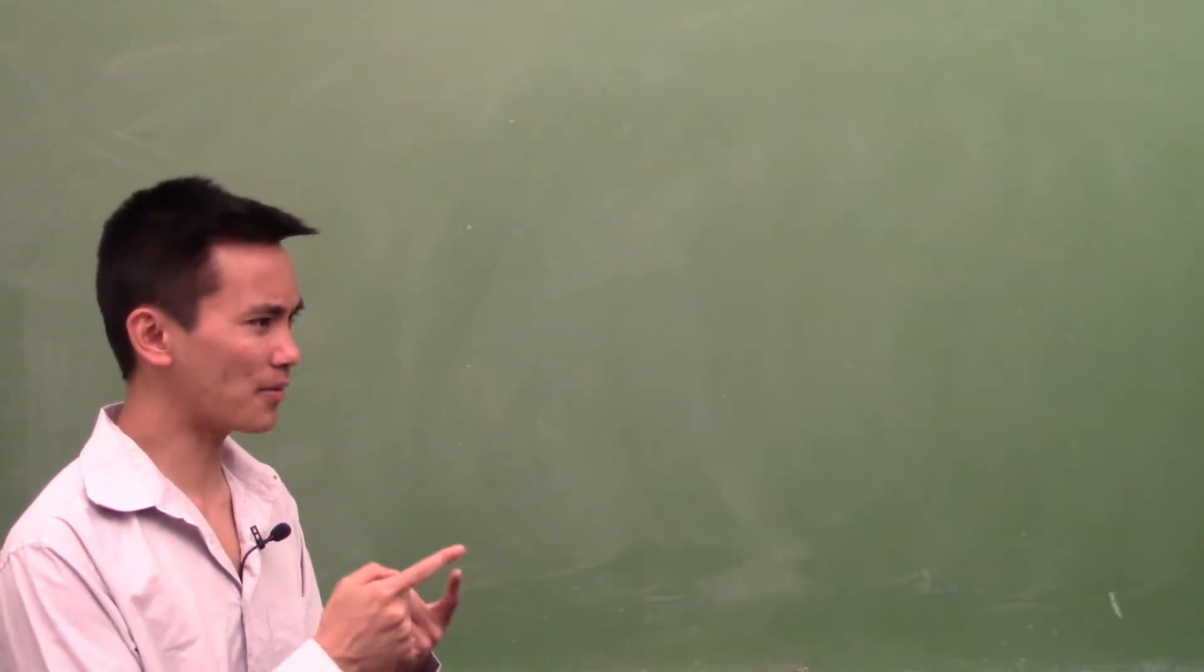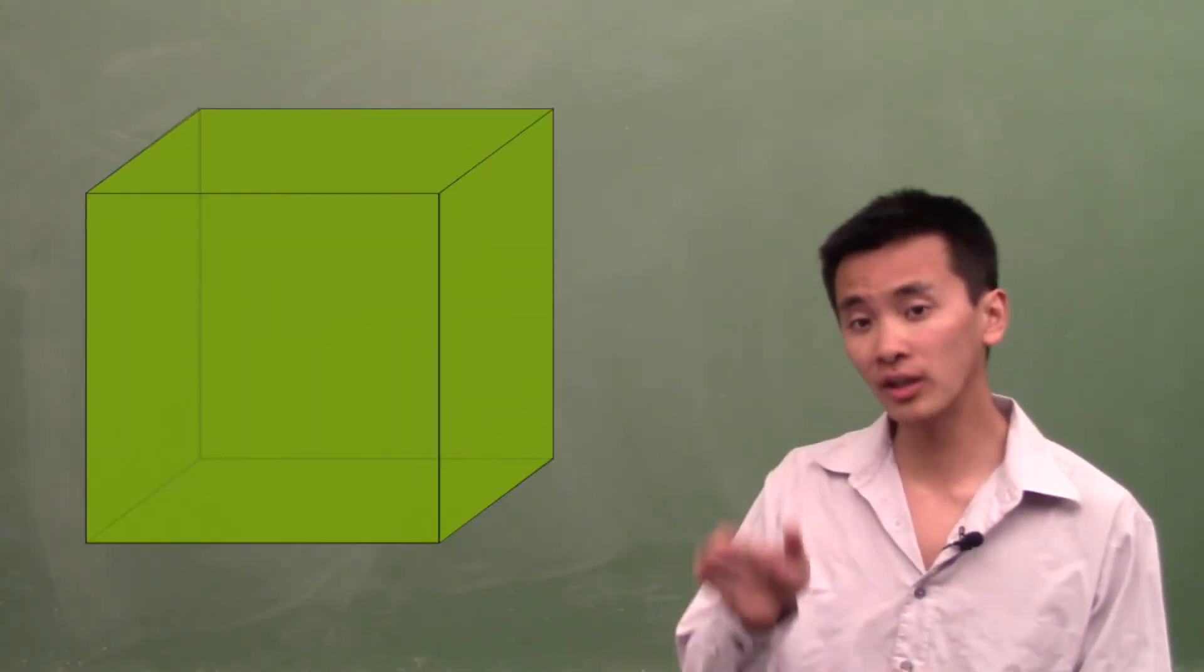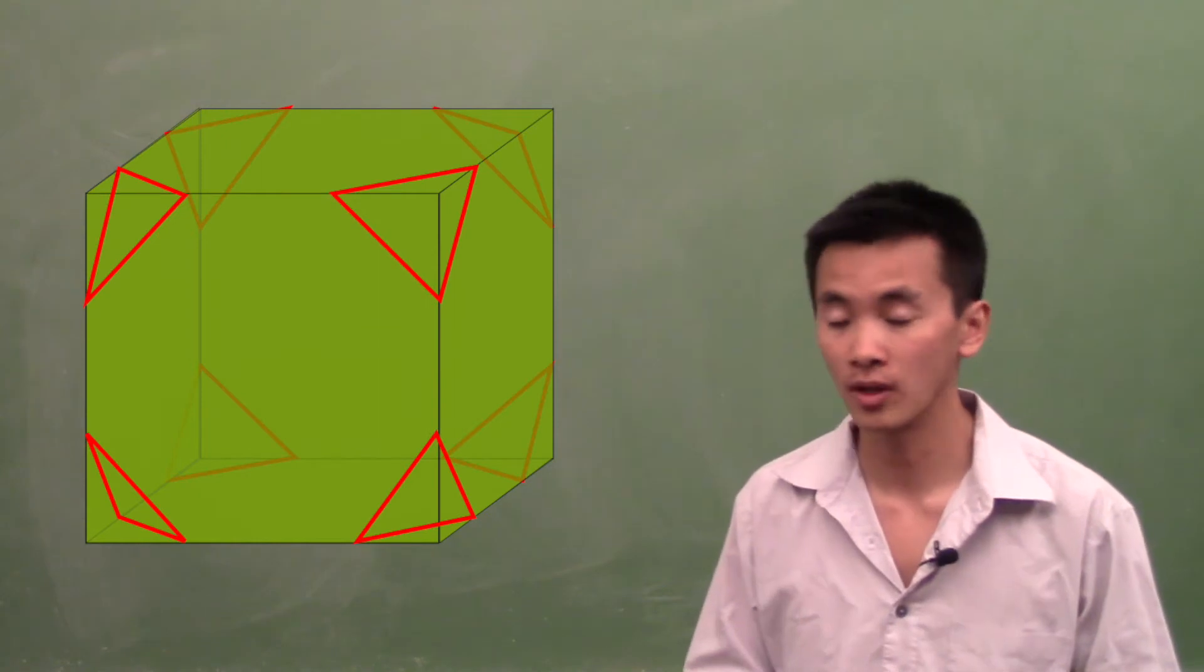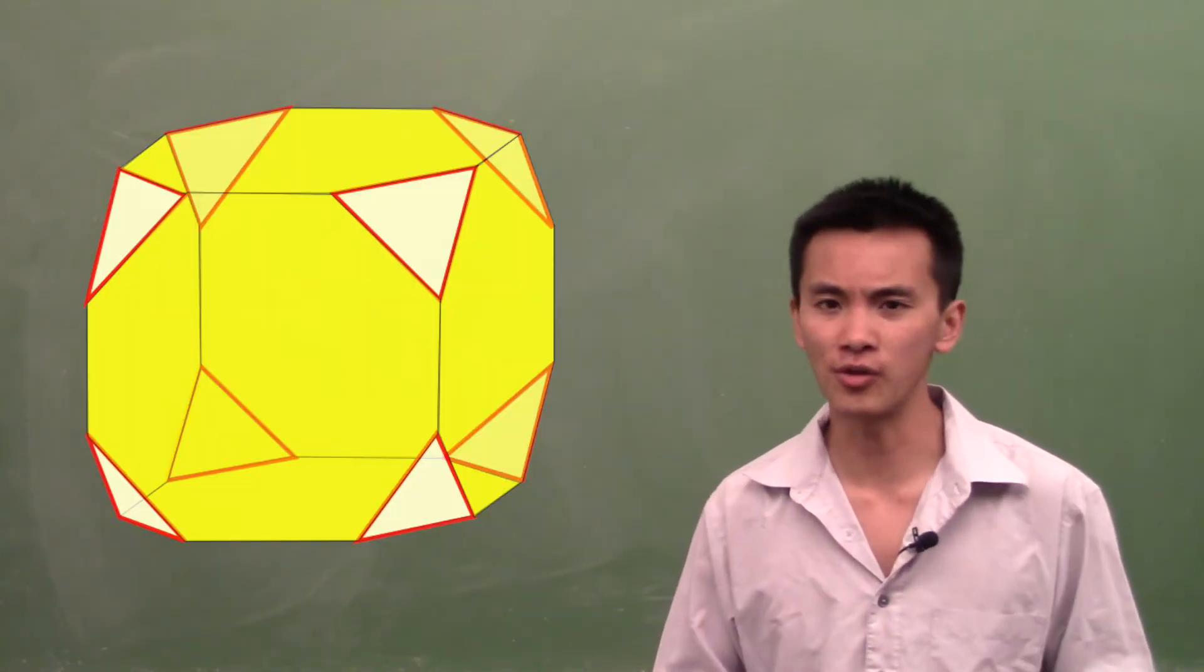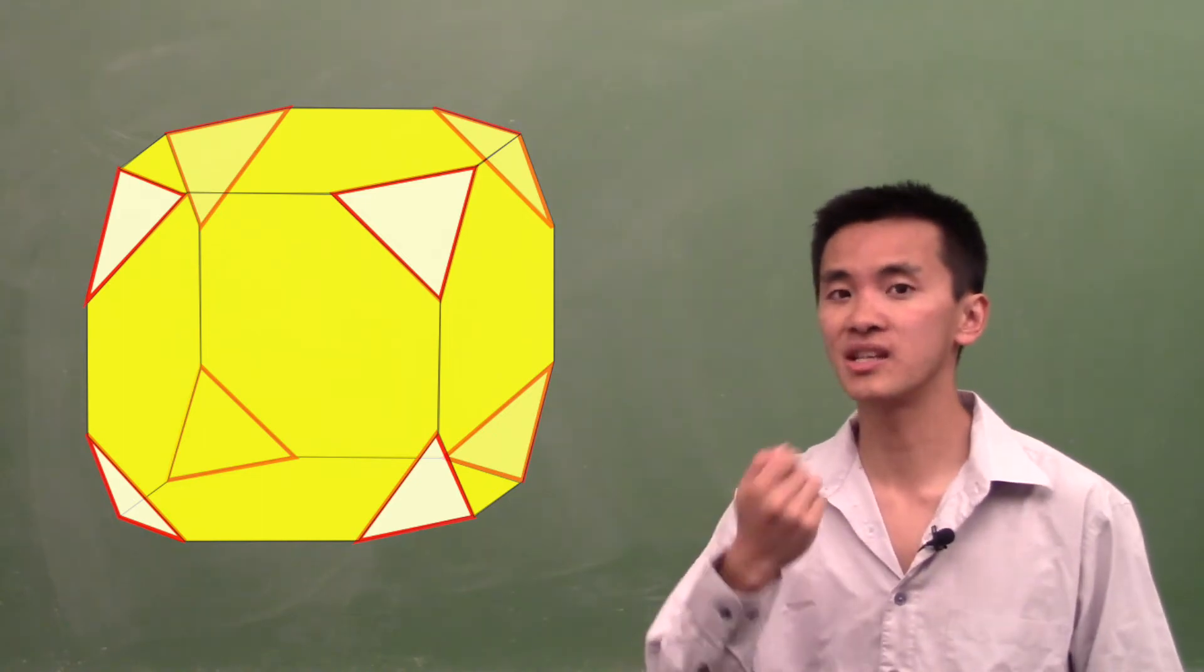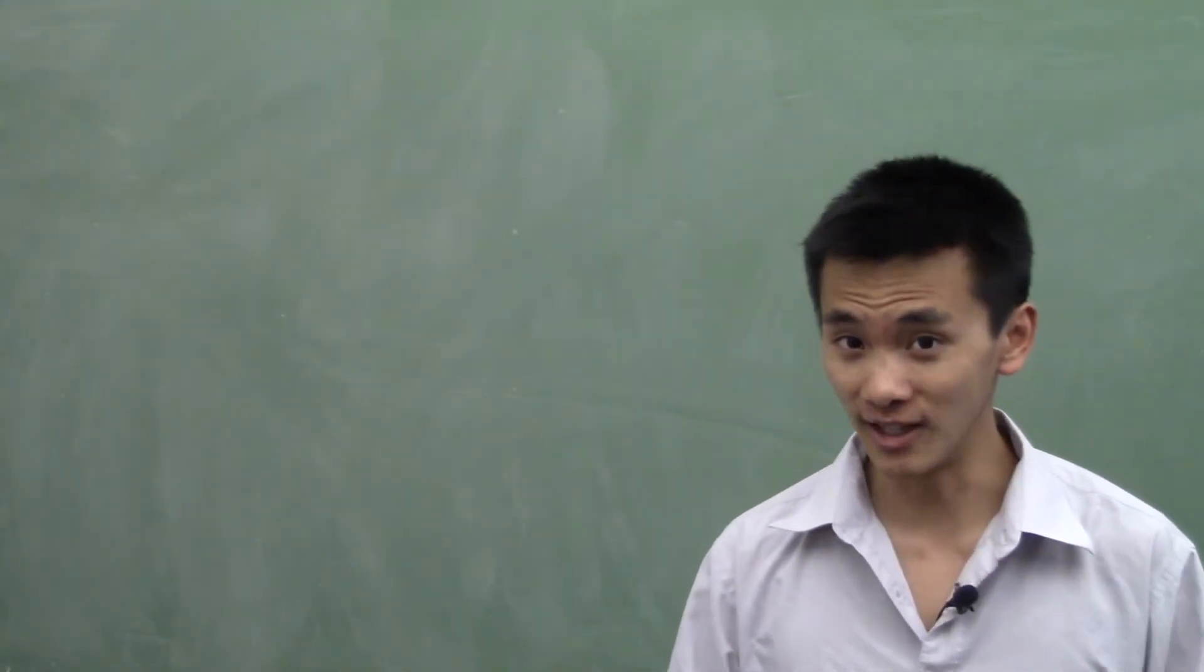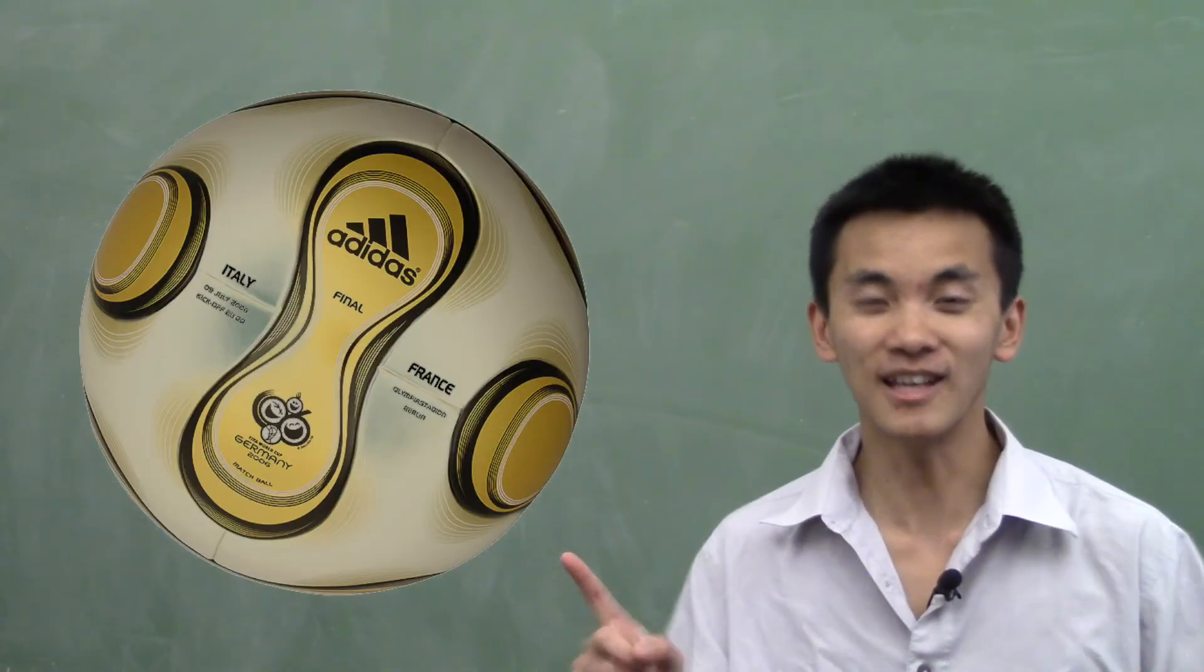Wait! I don't understand how they came up with that. What they did is they started with a cube and then they truncated the corners of the cube, just like we did for the icosahedron. But then they made the edges round. And when you curve the edges in the right way, you get the Teamgeist. Isn't it amazing?